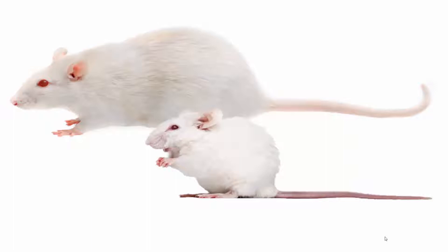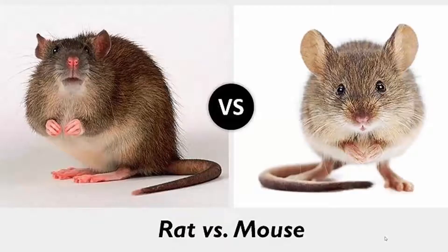How to differentiate between rats and mice. This seems to be a silly question, especially if we are talking about adult rats, because the difference in size is very obvious. Adult mice are much smaller than adult rats. Adult mice weigh around 30 to 50 grams and have bodies that are 8 to 10 centimeters long, while adult rats can weigh over 500 grams and measure over 25 centimeters in length.